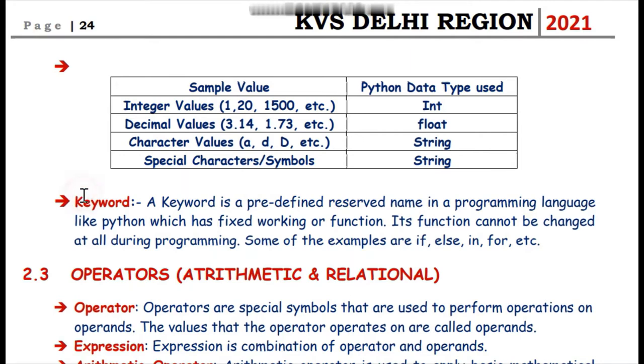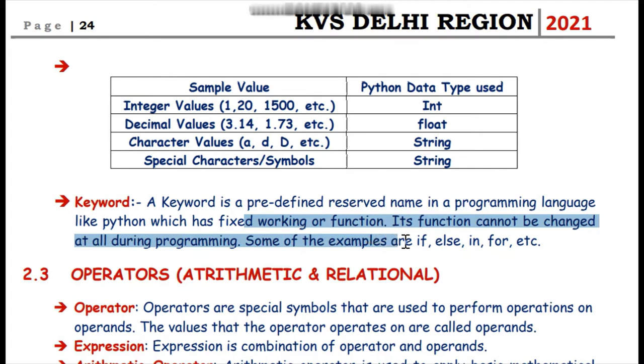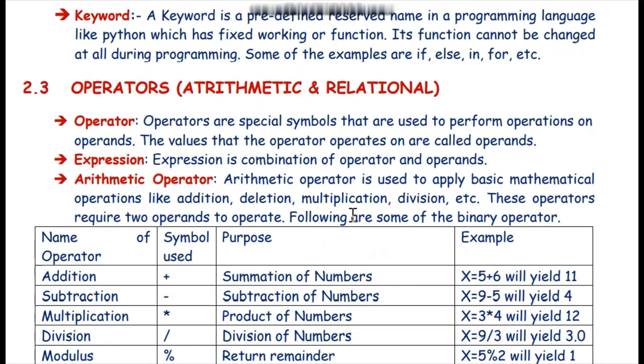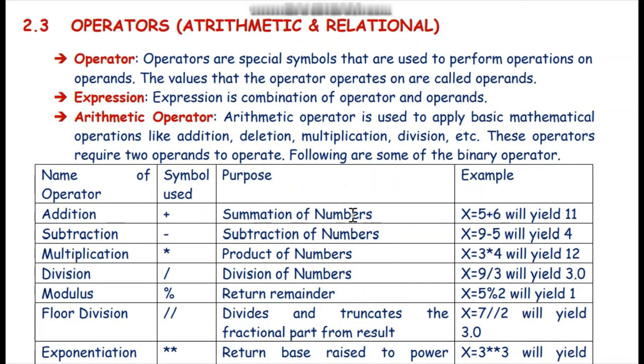The next important point is keyword. What is a keyword? Keyword is a predefined reserved name in any programming language which has some fixed working or function. Its working function cannot be changed at all during programming. Some examples are if, else, in, for, which we will learn in our Python language in the coming days. So keyword is a reserved name and it's very important to remember the function of each keyword because it will help us easily make our software.